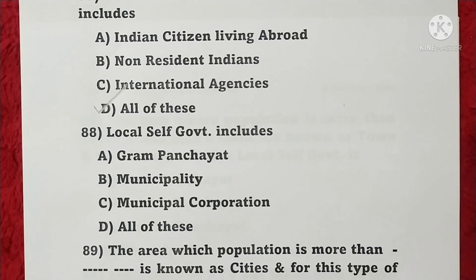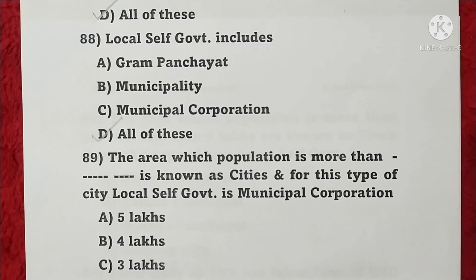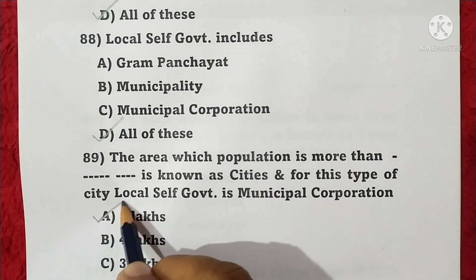Question 88: Local self government includes Gram Panchayat, municipality, and municipal corporation — all of these, so option D is correct. Question 89: The area where population is more than five lakhs is known as a city, and the local self government for this type of city is a municipal corporation — option A is correct.